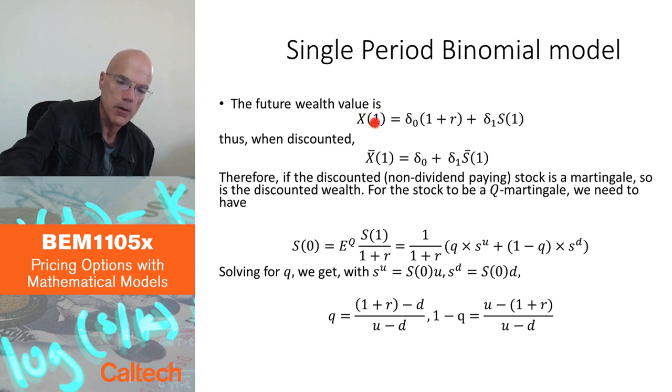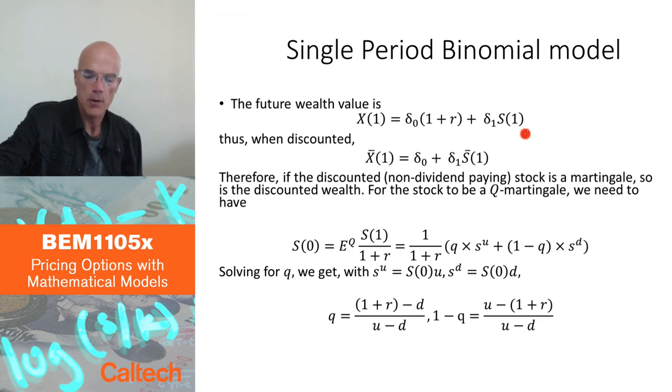The future wealth of a portfolio is money in the bank initially times 1 plus R, money in the bank in the future, plus shares in the stock times the future value of the stock. I'm going to have only one stock here. When you discount, 1 plus R disappears, delta 0 plus delta 1, discount, this bar of 1. Why did I do this? I just did this to show you, indeed, that, at least in this model, but it's also true in other models, if the discounted stock is a martingale, then also discounted wealth is a martingale, and therefore the conclusion from the previous slide still holds, the formula still holds. So I'm going to, in order to find probability Q under which discounted wealth is a martingale, I'm simply going to look for the probability Q under which discounted stock price is a martingale.